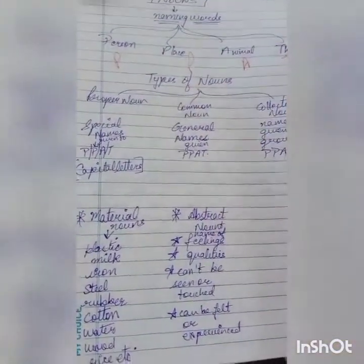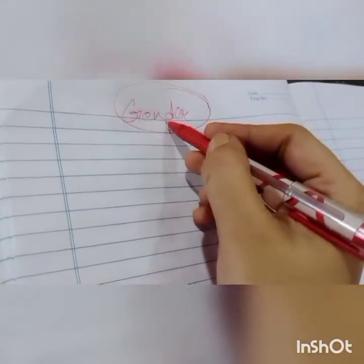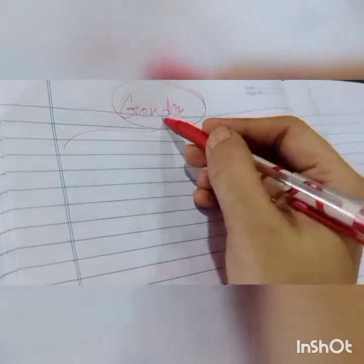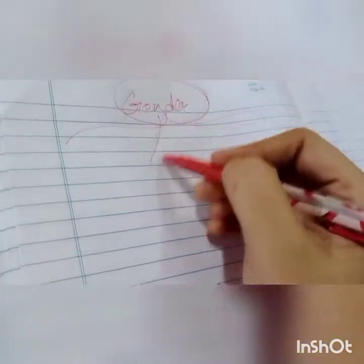Ab hum karenge types of nouns on the basis of gender. On the basis of gender, in how many categories can we divide nouns? Not two — four categories.